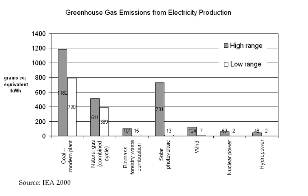Mitigation is a public good. Climate change is a case of the tragedy of the commons. Effective climate change mitigation will not be achieved if each agent acts independently in its own selfish interest — see international cooperation and emissions trading — suggesting the need for collective action. Some adaptation actions have characteristics of a private good, as benefits of actions may accrue more directly to the individuals, regions, or countries that undertake them, at least in the short term.